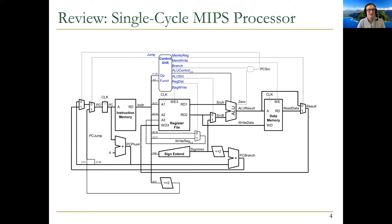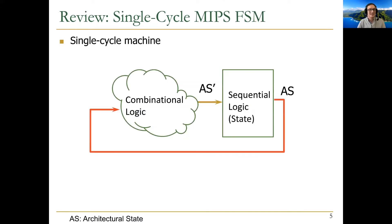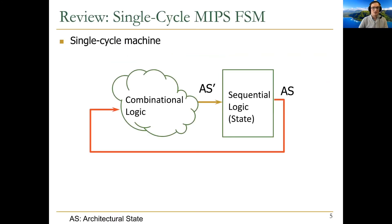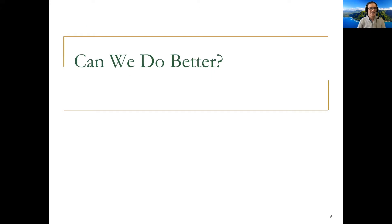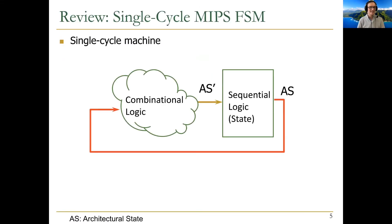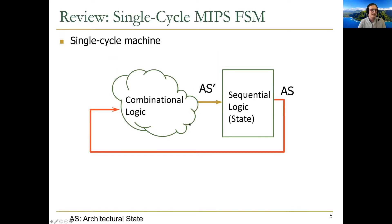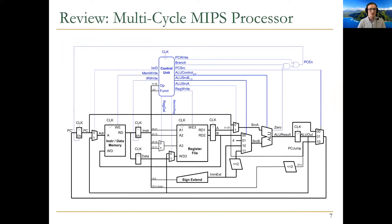Remember this was the single-cycle MIPS processor from last time, and this is its finite state machine. Can we do better? We found issues with single-cycle designs — watch lecture 12 for details. The big issue was that the worst-case instruction determined the clock cycle time. Because of that, we decided that a multi-cycle processor, where you process instructions across multiple cycles, is a better idea overall.